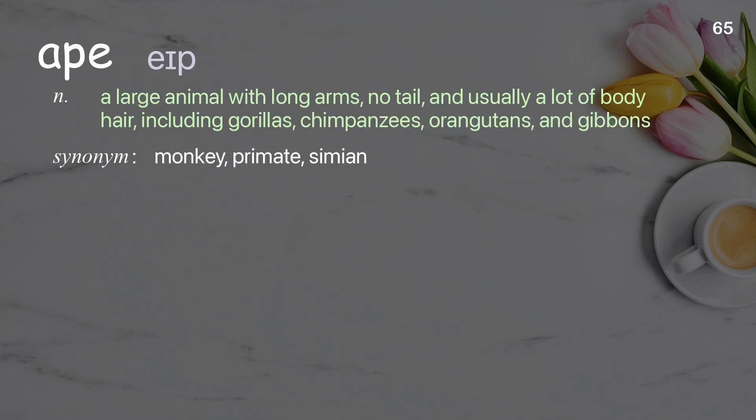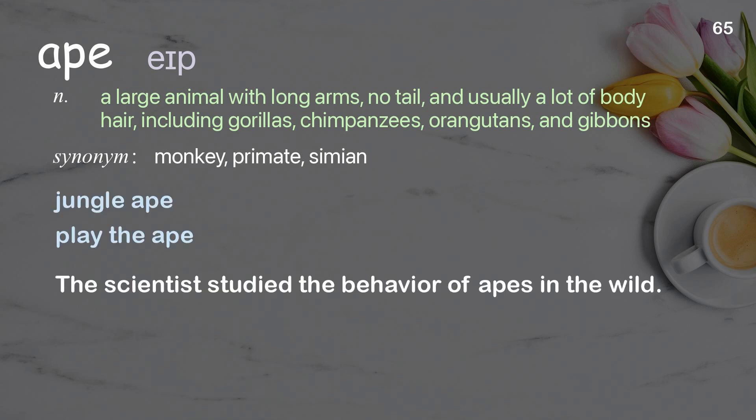Ape: a large animal with long arms, no tail, and usually a lot of body hair, including gorillas, chimpanzees, orangutans, and gibbons. Examples: jungle ape, play the ape. The scientist studied the behavior of apes in the wild.